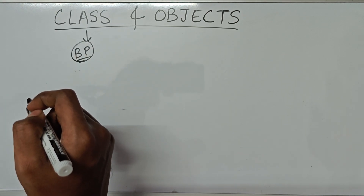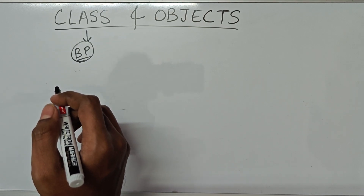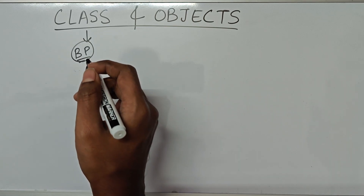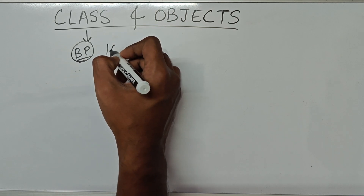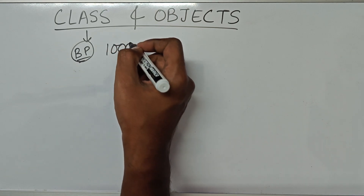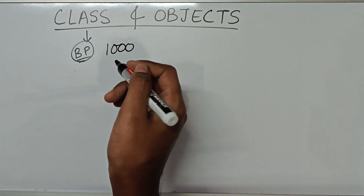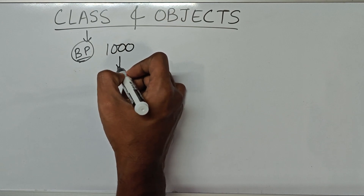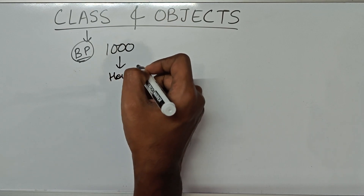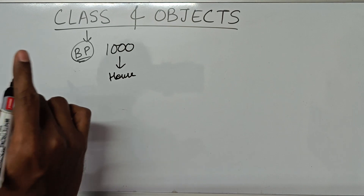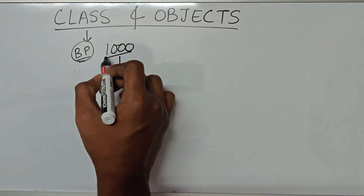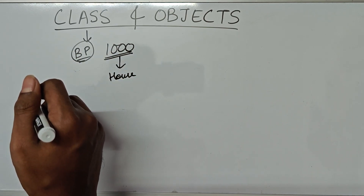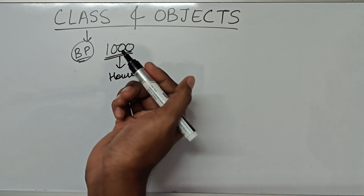Let me give you an example. Let's say a builder who builds many buildings and sells them. He's trying to build, let's say, 1000 houses and then sell them to make profits. So what will he do? Will he create designs for 1000 houses? No, what he will do is make one design, and then he can build 1000 houses of the same design. So that is one blueprint which he'll use to build all the 1000 houses.